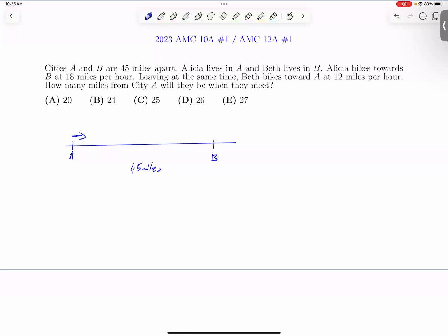Alicia is going to be from A. She is biking 18 miles per hour. And Beth is going to A from B, and she is biking 12 miles per hour. They will meet at some point between A and B.